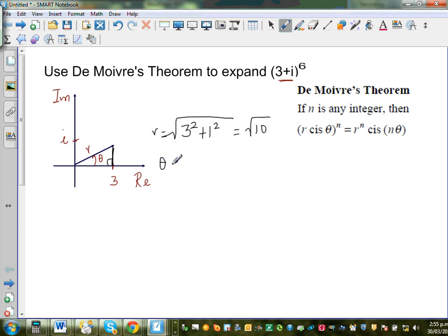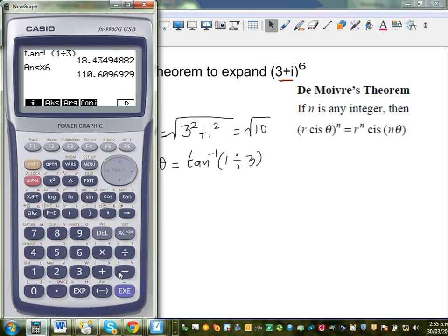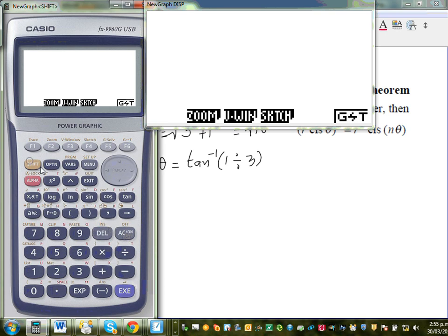Theta is tan inverse of, this is 1 and this is 3. So your opposite is 1, adjacent is 3. So tan is opposite over adjacent, which is 1 divided by 3. So let me get my calculator. So tan shift tan, 1 divided by 3.